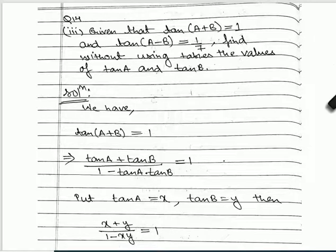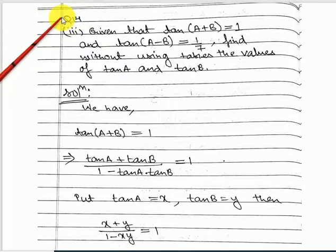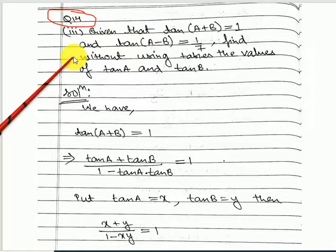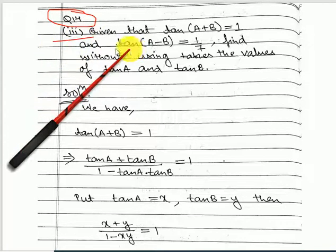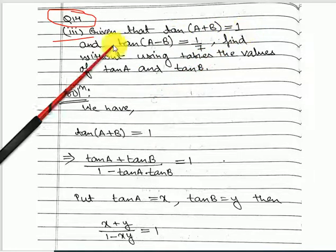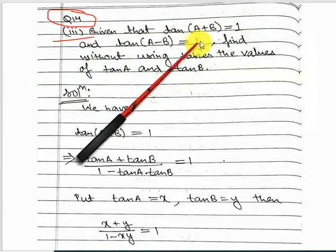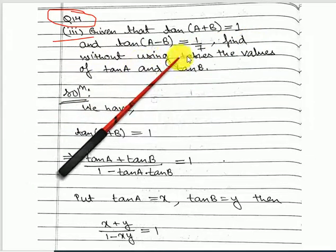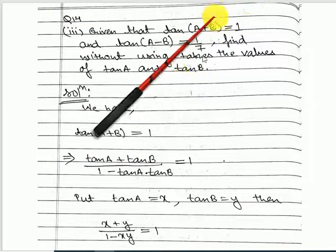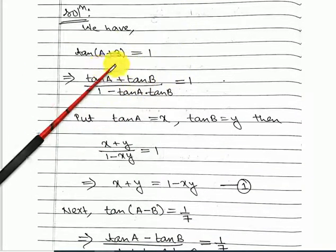Good morning children. We are doing chapter 6 and this is your third lecture on chapter 6. We are going to do question number 14.3. It says: given that tan(A+B) is equal to 1 and tan(A-B) is equal to 1/7, find without using tables the values of tan A and tan B.